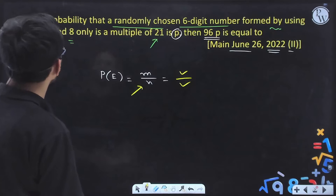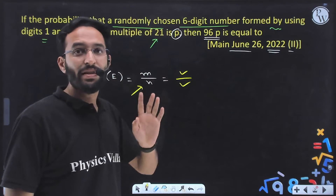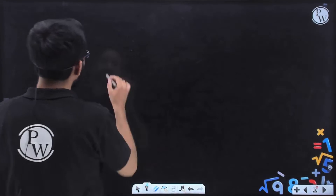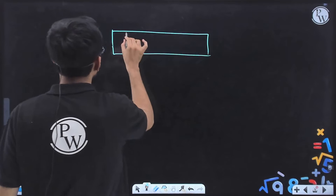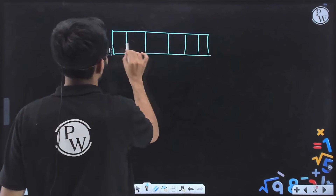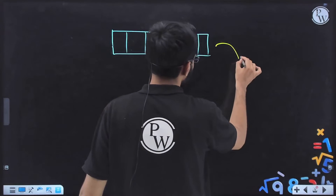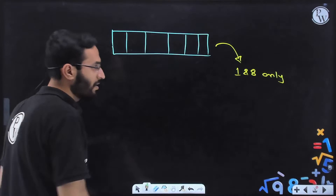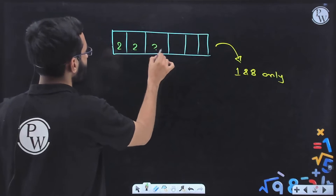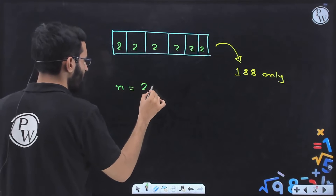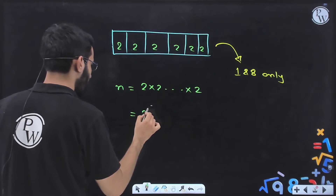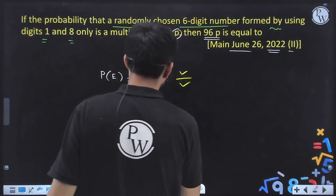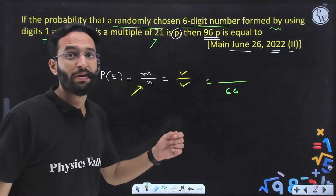n is the total number of outcomes. We require one six-digit number formed by using only digits 1 and 8. So for each of the six places we are having only two options — either 1 or 8. For each place having two options, total number of outcomes will be 2 × 2 × 2... six times, which is 2 to the power 6. Two to the power six is 64. So total number of outcomes n = 64.